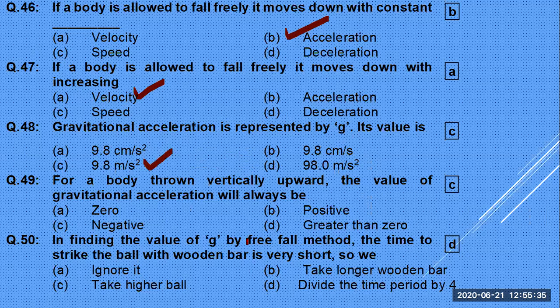For a body thrown vertically upward, the value of gravitational acceleration will always be negative. Using the formula a = (Vf − Vi) / t: when thrown upward, initial velocity is maximum and final velocity at the top is zero. So zero minus maximum gives a negative value — that is why acceleration is negative.